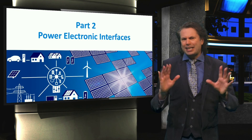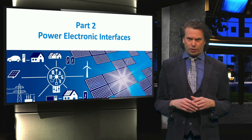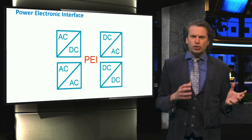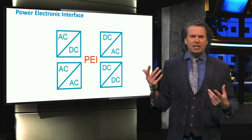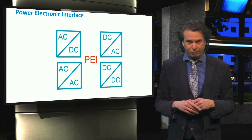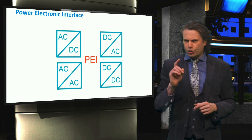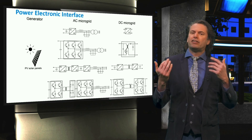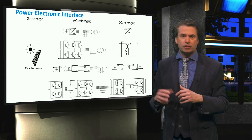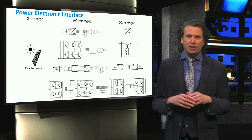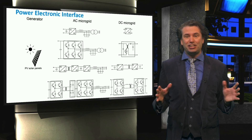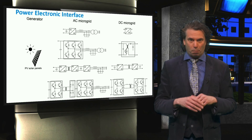In the second part we will discuss the power electronics interfaces. We will discuss all combinations of AC and DC power electronics interfaces. You will learn about the various interfaces in AC and DC microgrids for renewable generation components, non-renewable components and energy storage components.